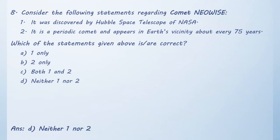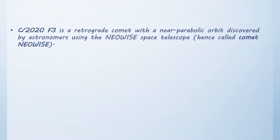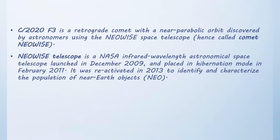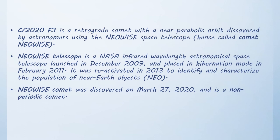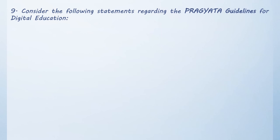The correct answer is Option D, neither one nor two — both statements are incorrect. C/2020 F3 is a retrograde comet with a near-parabolic orbit, discovered by astronomers using the NEOWISE space telescope, hence called Comet NEOWISE. The NEOWISE telescope is a NASA infrared-wavelength astronomical space telescope launched in December 2009 and placed in hibernation mode in February 2011; it was reactivated in 2013 to identify and characterize near-Earth objects. Comet NEOWISE was discovered on March 27, 2020, and is a non-periodic comet.